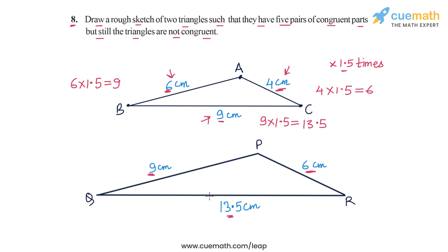If we compare the sides of the two triangles, we see that two pairs of sides are equal: AB is equal to PR, and BC is equal to PQ.